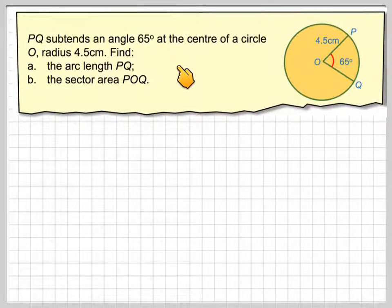PQ subtends an angle of 65 degrees at the centre of a circle O. The radius is 4.5 centimetres. Find the arc length PQ and the sector area POQ.